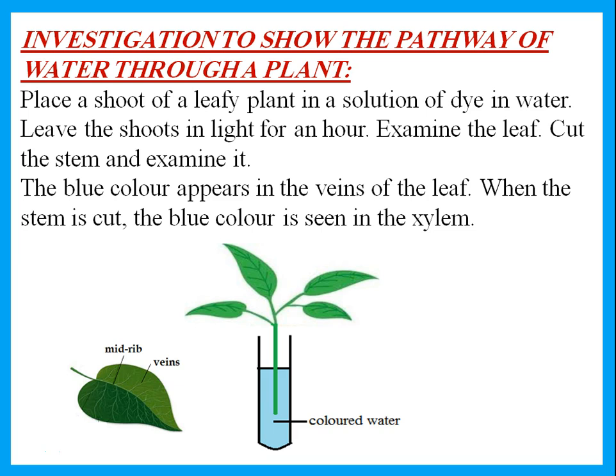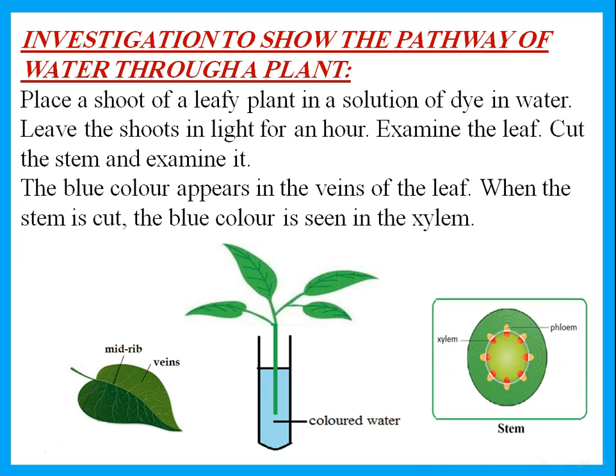The blue color appears in the veins and midrib because this is where we have xylem vessels. The xylem comes to the leaves and goes through the midrib and the veins. When the stem is cut, the blue color is seen in the xylem. That means the blue color has moved up through the xylem.